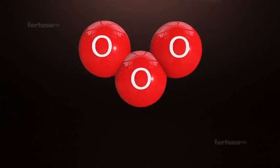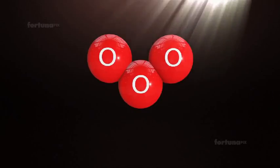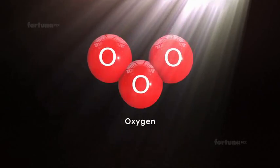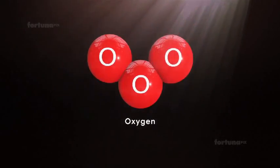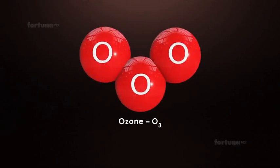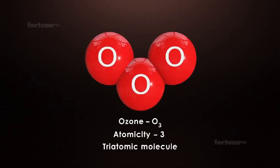Ozone, the chemical that protects us from the harmful ultraviolet rays of the sun, is made from 3 oxygen atoms. The molecular formula for ozone is O3. The atomicity of ozone is 3, and it is a triatomic molecule.